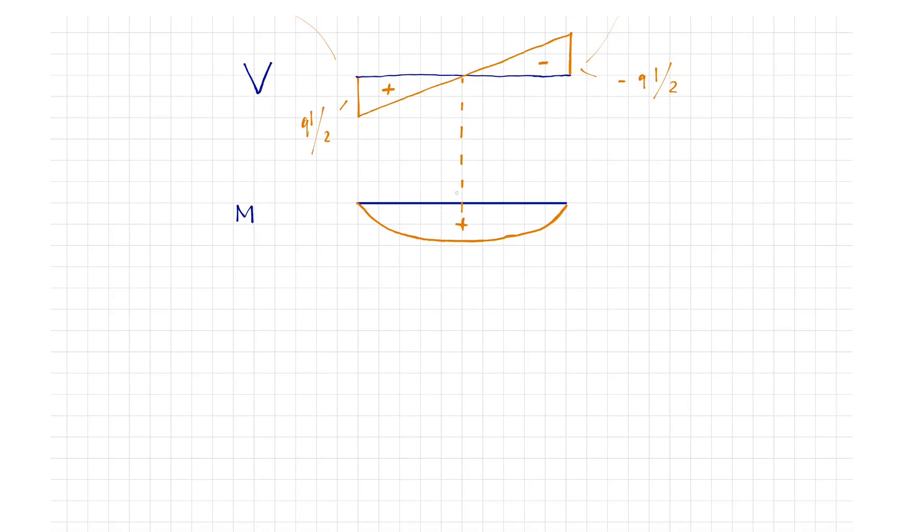Now let's calculate the maximum moment in the mid-span. We cut in the positive side of the section at x equal to L through 2 and draw the acting forces.